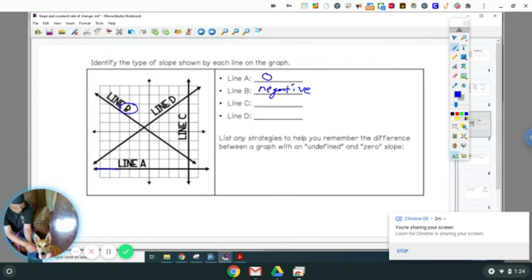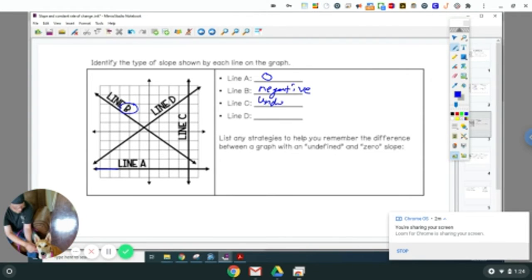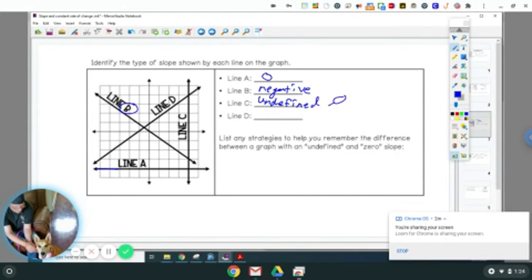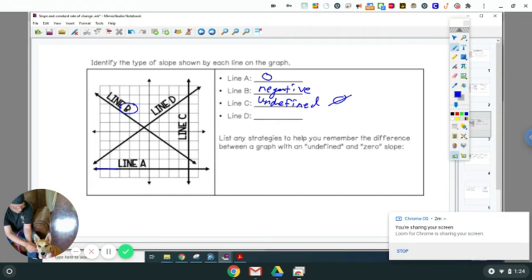Line C is vertical, so it means it's undefined. Undefined can be written out as undefined, or you can write a zero with a slash through it. It means that's not possible to do. And then line D from left to right is going upwards, so it's positive.